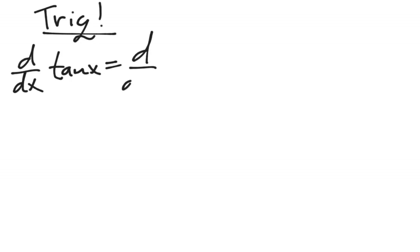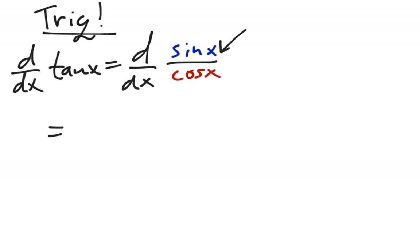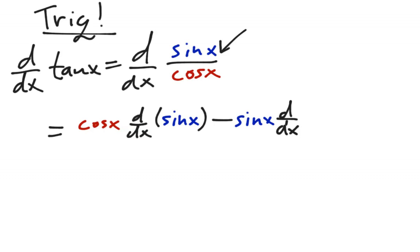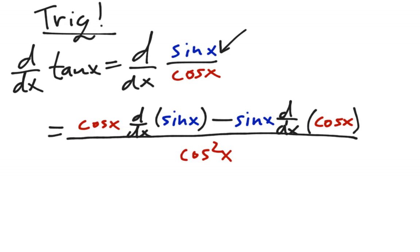Trig — it's back, everybody's favorite. The product and quotient rules are very useful for figuring out trigonometry derivatives. Let's find the derivative of tangent of x. We don't know what it is, but we can find it, because tangent is sine over cosine. We have two functions — sine and cosine — and they're divided, so we use the quotient rule: low d high minus high d low, draw the line and square below.